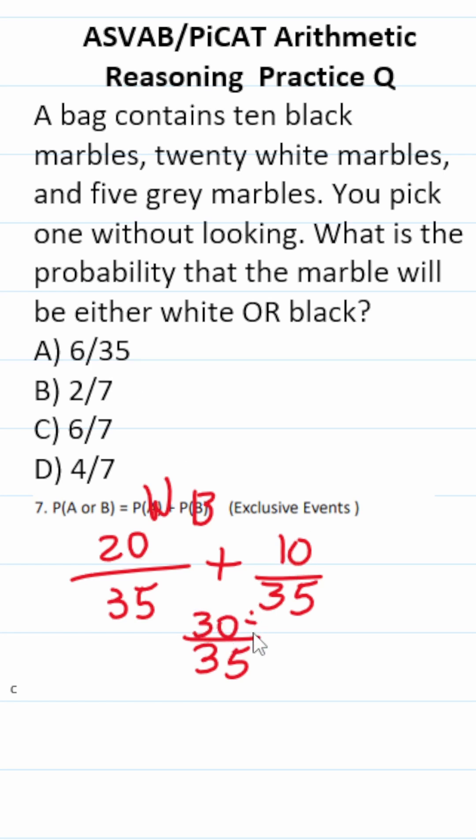This isn't an answer choice because we could reduce this by a common factor of 5. 30 divided by 5 is 6. 35 divided by 5 is 7. So your odds of picking either a white or black marble are C, 6 over 7.